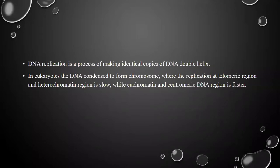As we know, DNA replication is a process of making identical copies of the DNA double helix. In eukaryotes, the DNA is condensed to form chromosomes, and replication at the telomeric region and heterochromatin region is slow.